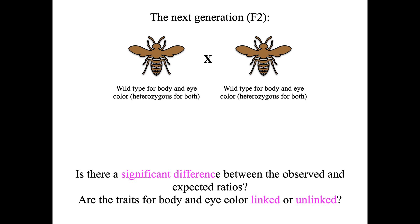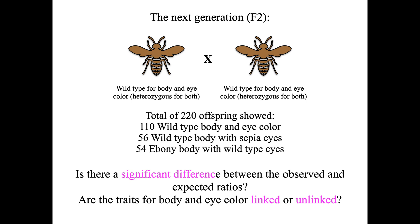What we're looking for here is: is there a significant difference between the observed and the expected ratios? Are the traits for body color and eye color linked or unlinked? For that, we need to know what the observed offspring were. You will need to calculate what you would have expected, but the observed offspring totaled 220, and here is the data for them.